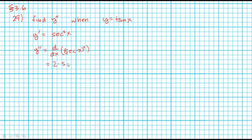Bring the power down, leave the inside the same, reducing the power by 1, and now multiply this by the derivative of the inside, which is secant x tangent x.